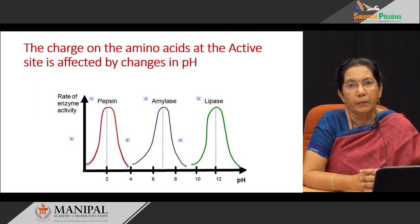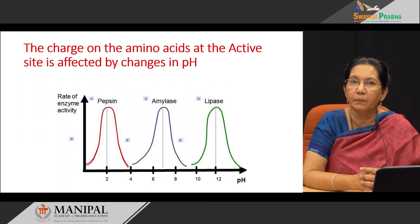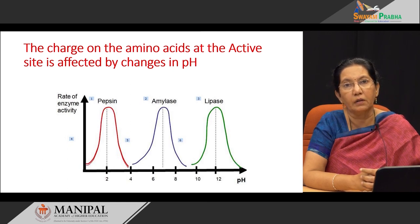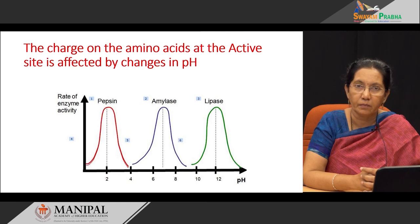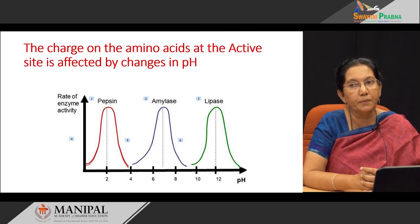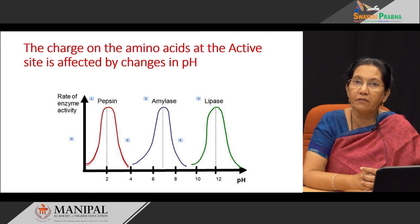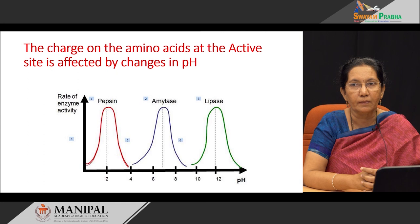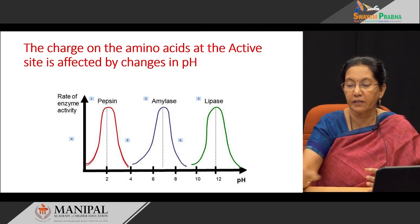Since amino acids make up most of the portion of the active site, any change that happens in the pH of the surroundings of an enzyme is going to affect the charges of an enzyme. When the charges are affected on the active site, the functioning of that enzyme also gets affected. Therefore, we see that certain enzymes have certain optimum pH. Pepsin, for example, has an optimum pH at 2. That means it can only function when it is in an acidic pH, because the charges of the R groups at the active site are functionally stable at that pH. This is how the active site is affected by pH.